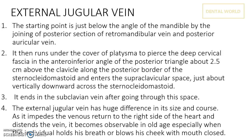You have to remember this — it is very important from an examination point of view. After that, it runs under the cover of the platysma muscle to pierce the deep cervical fascia in the anterior inferior angle of the posterior triangle, which is about 2.5 cm above the clavicle, along the posterior border of the sternocleidomastoid muscle, and into the supraclavicular vein just about vertically downward across the sternocleidomastoid. This is again a very important point from a clinical point of view.